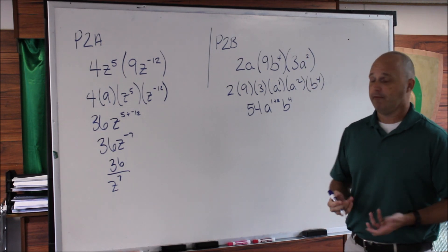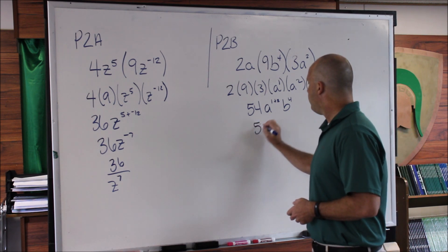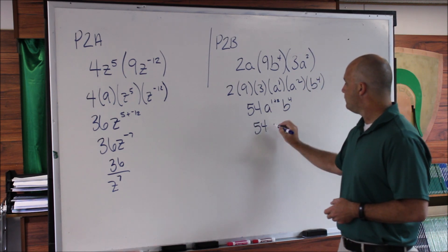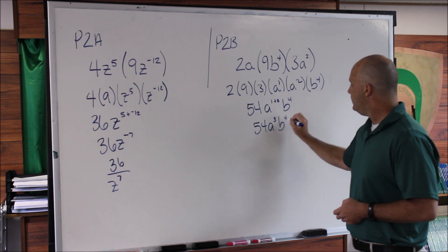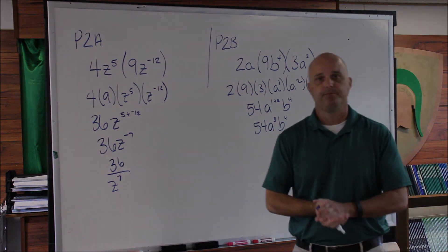Now I'm one step away from having this problem done. 54, 1 + 2 is 3. So 54a^3b^4, and then you're done.